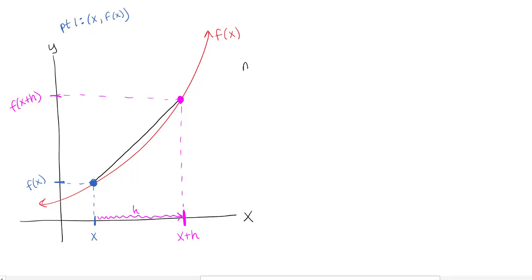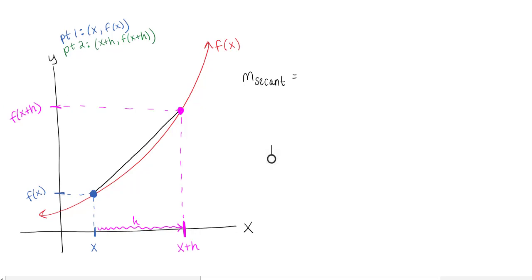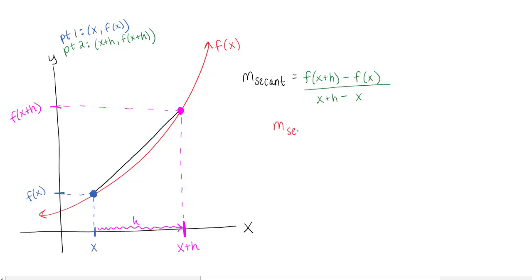The slope of the secant line requires the two points. The second point was x plus h comma f of x plus h. To find the slope, we take y₂ minus y₁ over x₂ minus x₁ — that's f of x plus h minus f of x, all over h. Combining like terms in the denominator, m equals f of x plus h minus f of x, all over h.